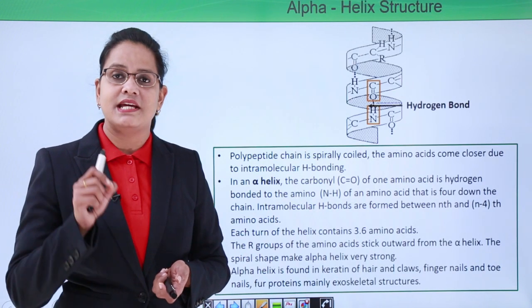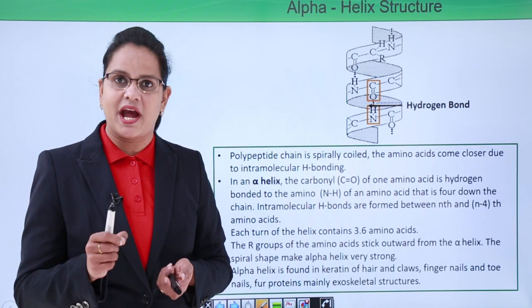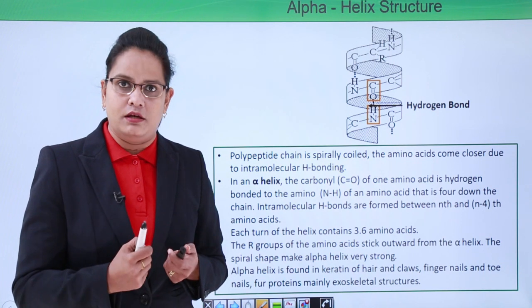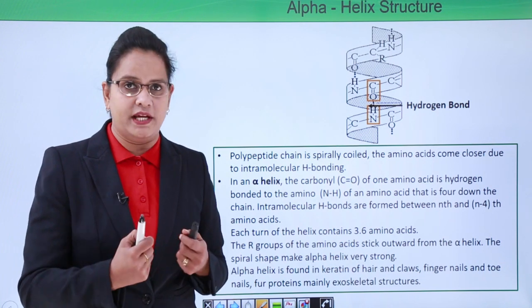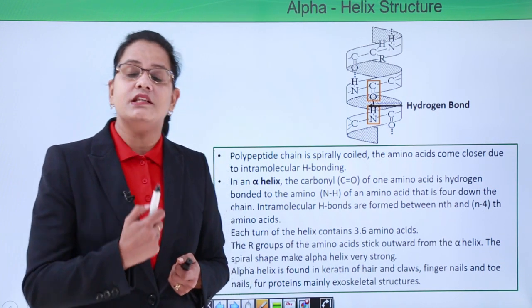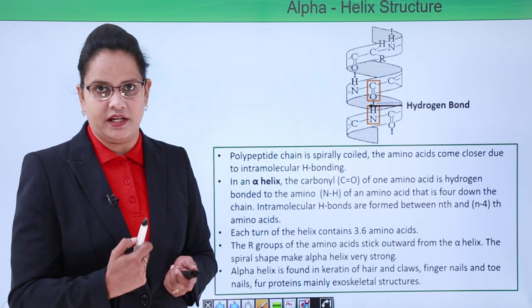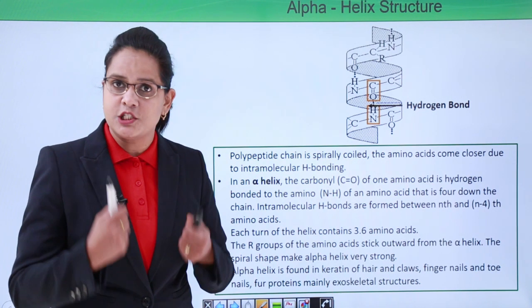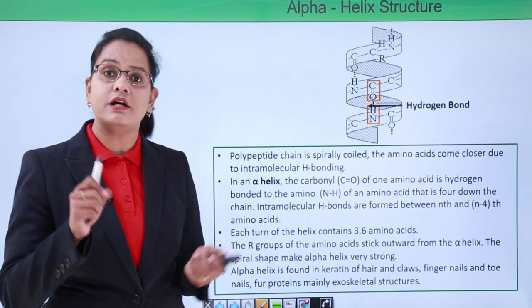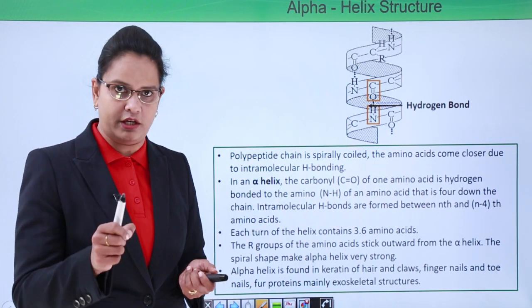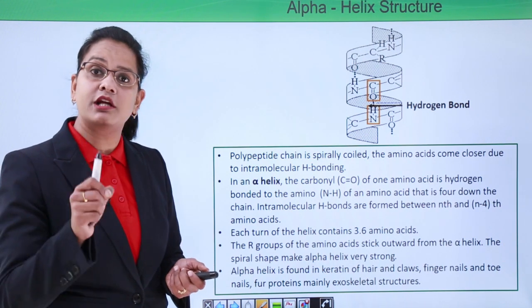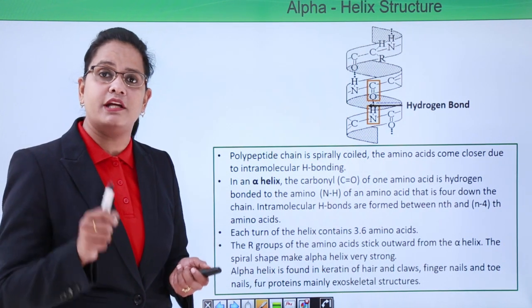The alpha helix is like a spiral — just imagine a coil of a spring. It is in the form of a spring. How is this spring form achieved? It is because of intramolecular hydrogen bonding.